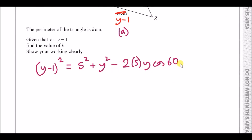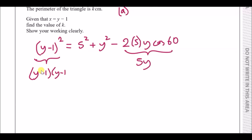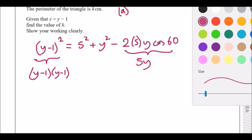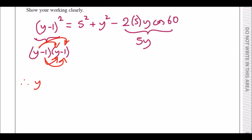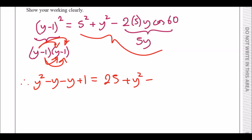Now simplify. Two times five times cos 60 equals exactly five, so put five y. For (y minus one) squared, expand it as y minus one times y minus one: y squared minus y minus y plus one, giving y squared minus 2y plus one. The right-hand side is 25 plus y squared minus 5y.